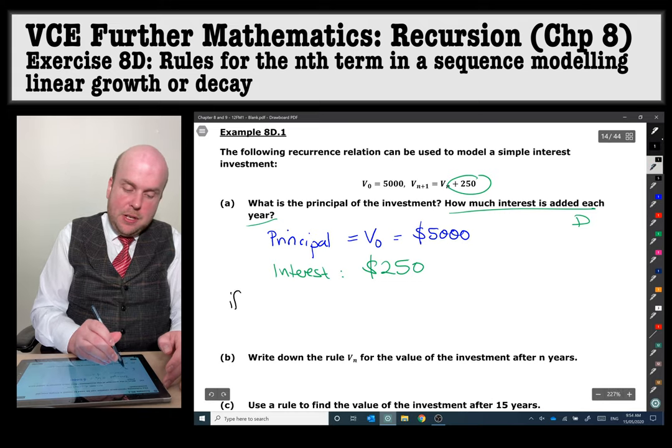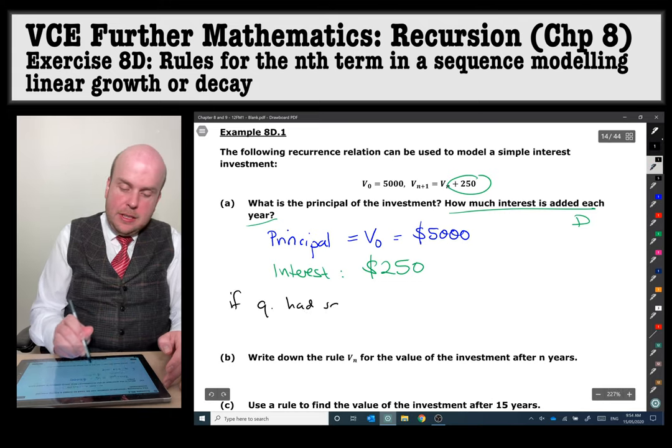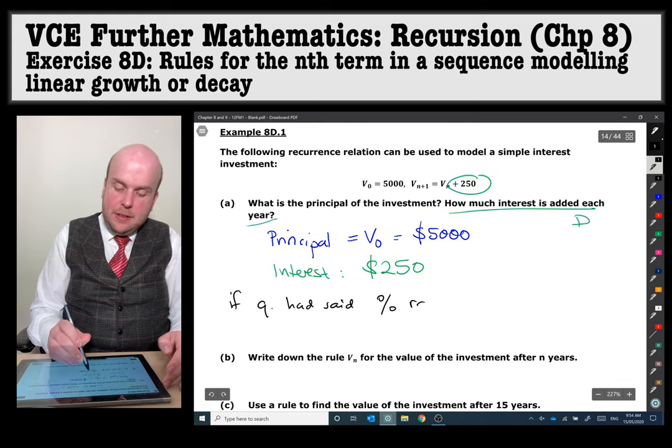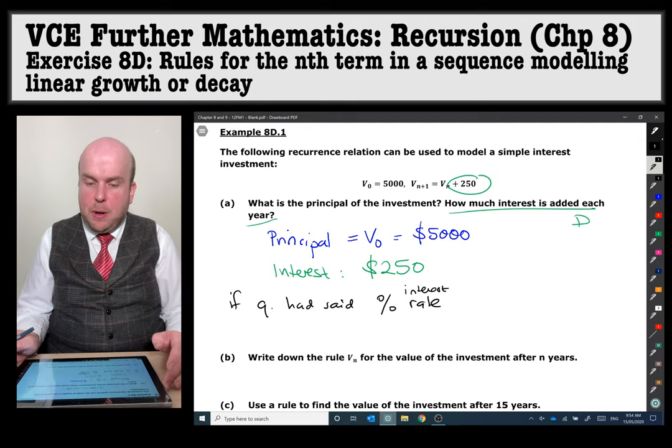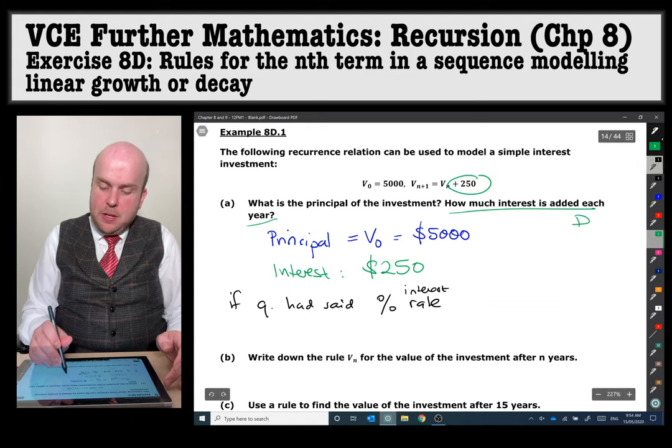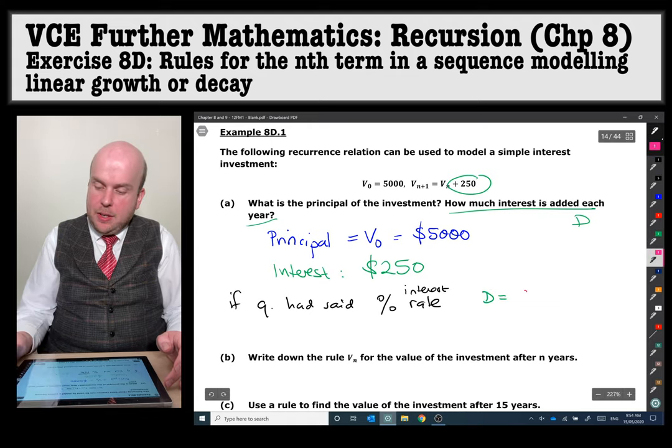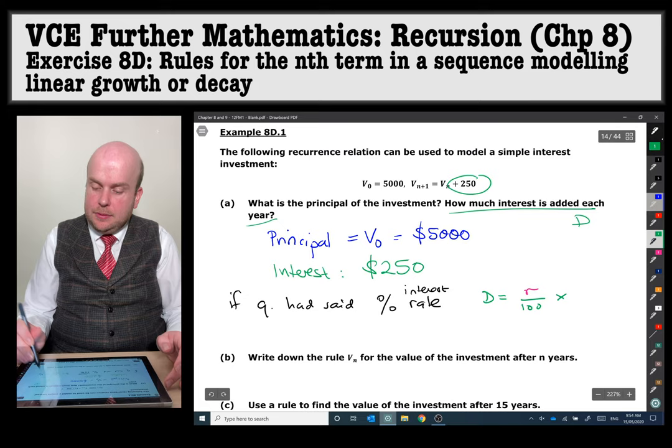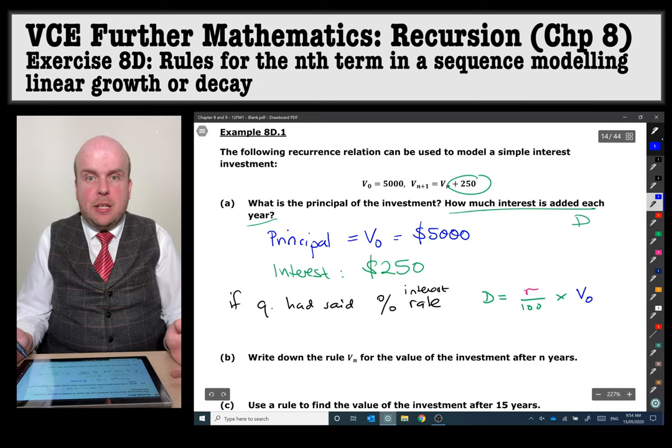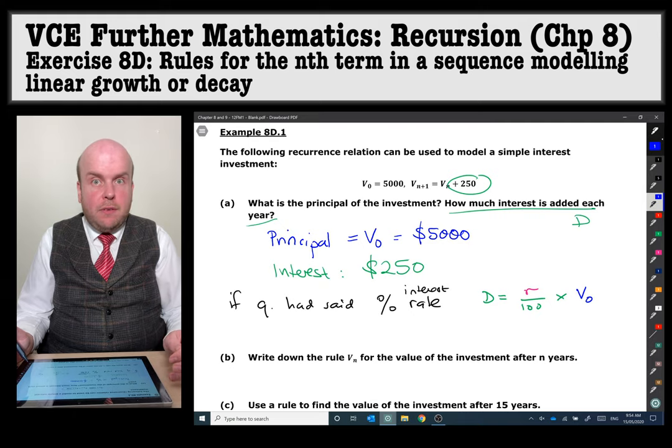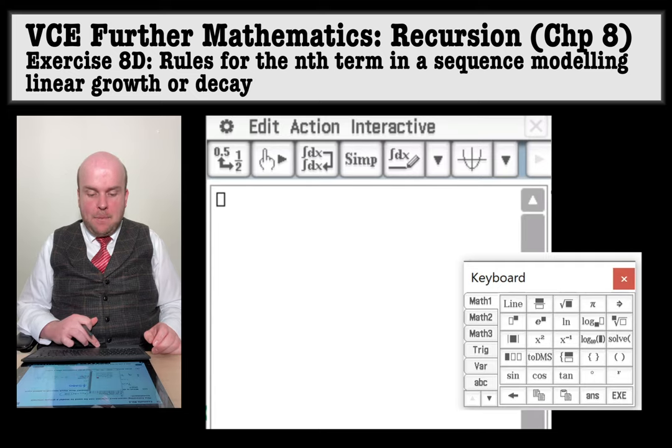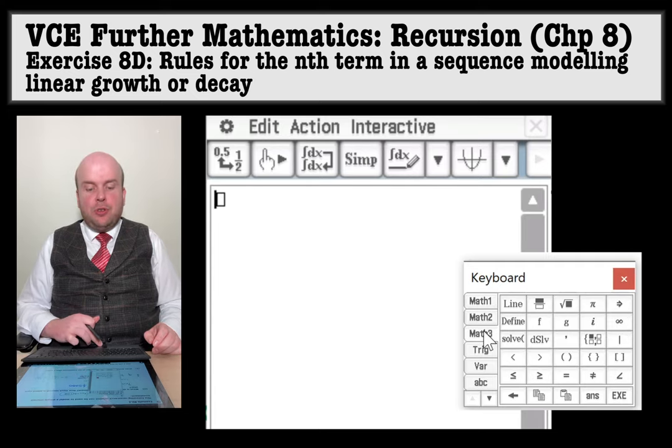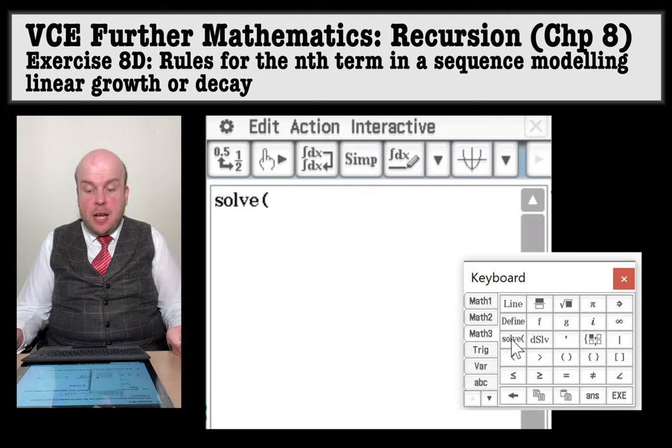Now if it had asked for something a little bit different, if the question had said find the interest rate, then we'd have to do something a little bit more complex. So what we would do is we know that d is equal to little r over a hundred times by the V0. Now we can actually use our calculator to assist us in this matter by using the solve function. In your CAS calculator the solve function is under math 3.